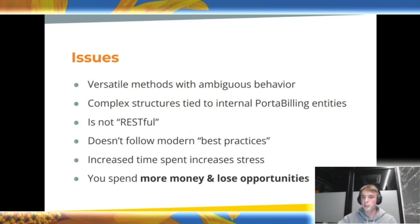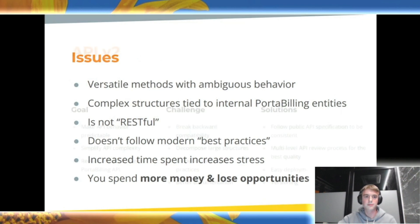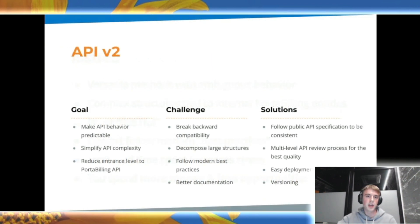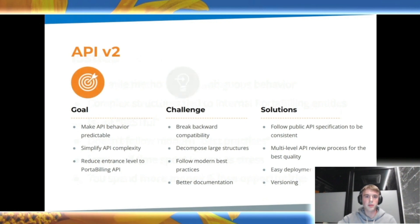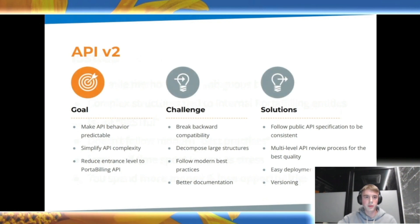We want to change it for the better. We want to make API more predictable and less complex. To achieve that, we have to drastically change methods, decompose large structures, design API following best practices, and use better documentation.